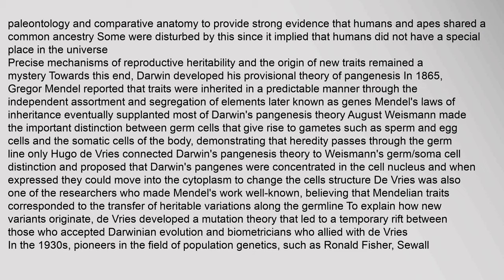Some were disturbed by this since it implied that humans did not have a special place in the universe. Precise mechanisms of reproductive heritability and the origin of new traits remained a mystery. Darwin developed his provisional theory of pangenesis in 1865. In that same year, Gregor Mendel reported that traits were inherited in a predictable manner through the independent assortment and segregation of elements later known as genes. August Weismann made the important distinction between germ cells that give rise to gametes and the somatic cells of the body, demonstrating that heredity passes through the germ line only.